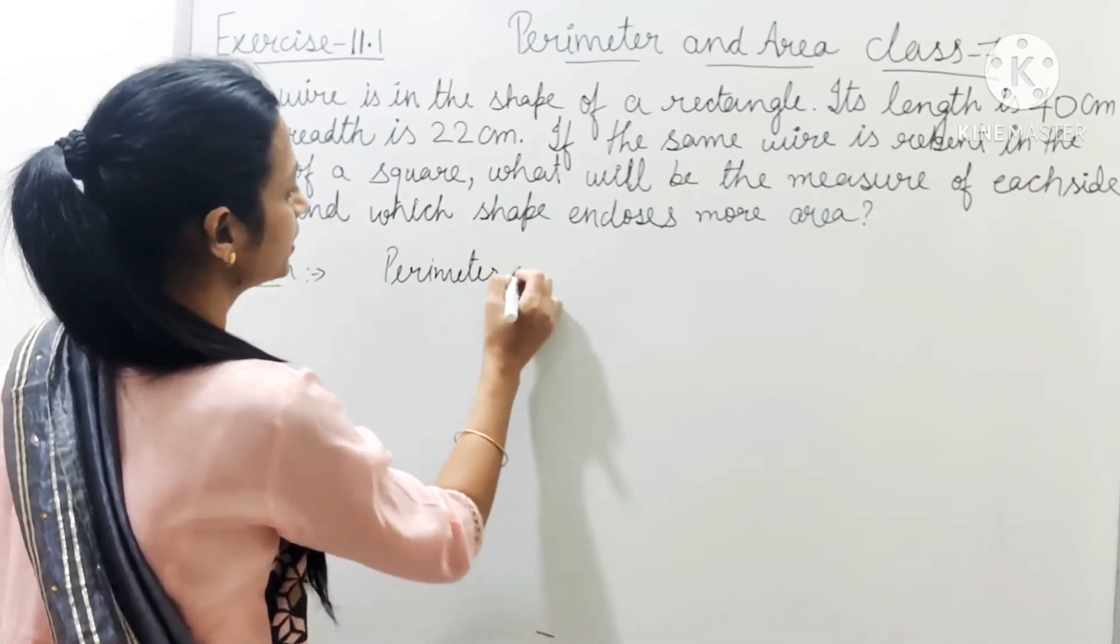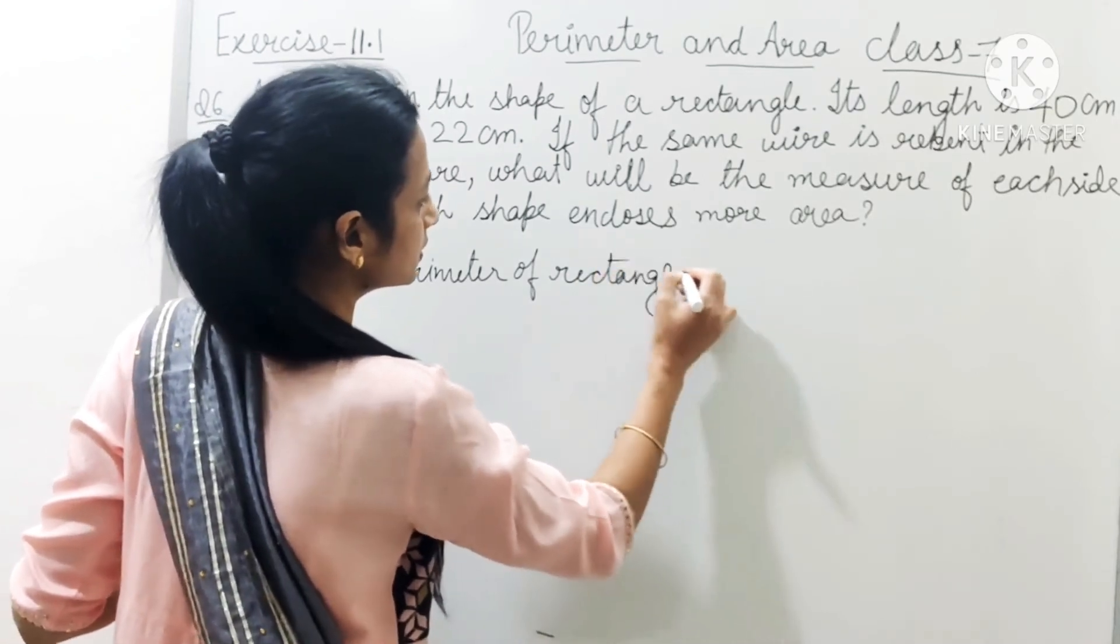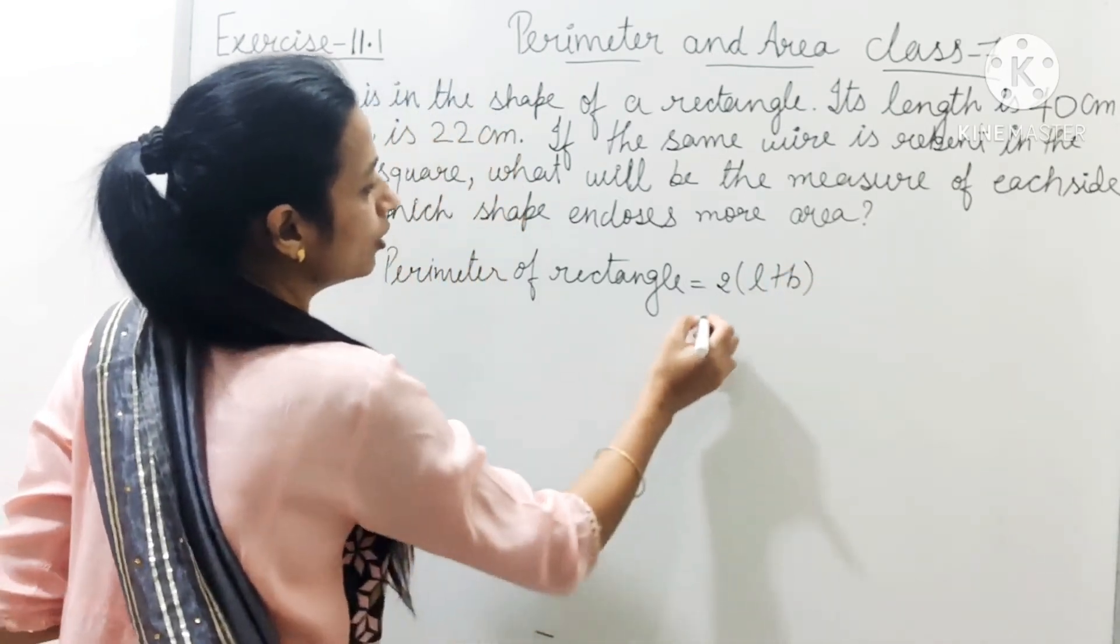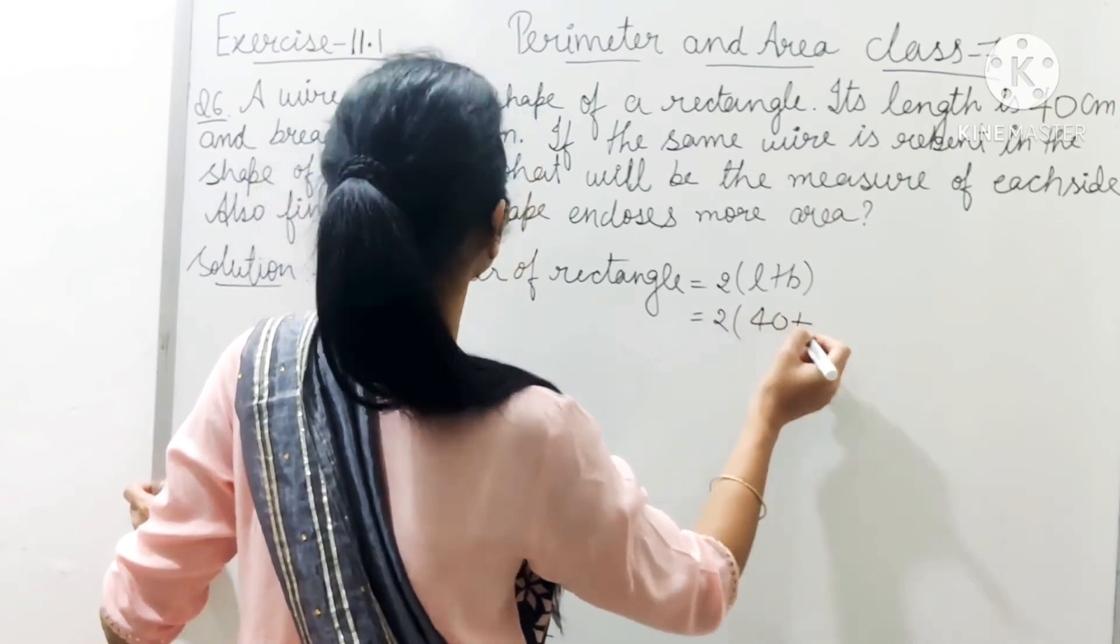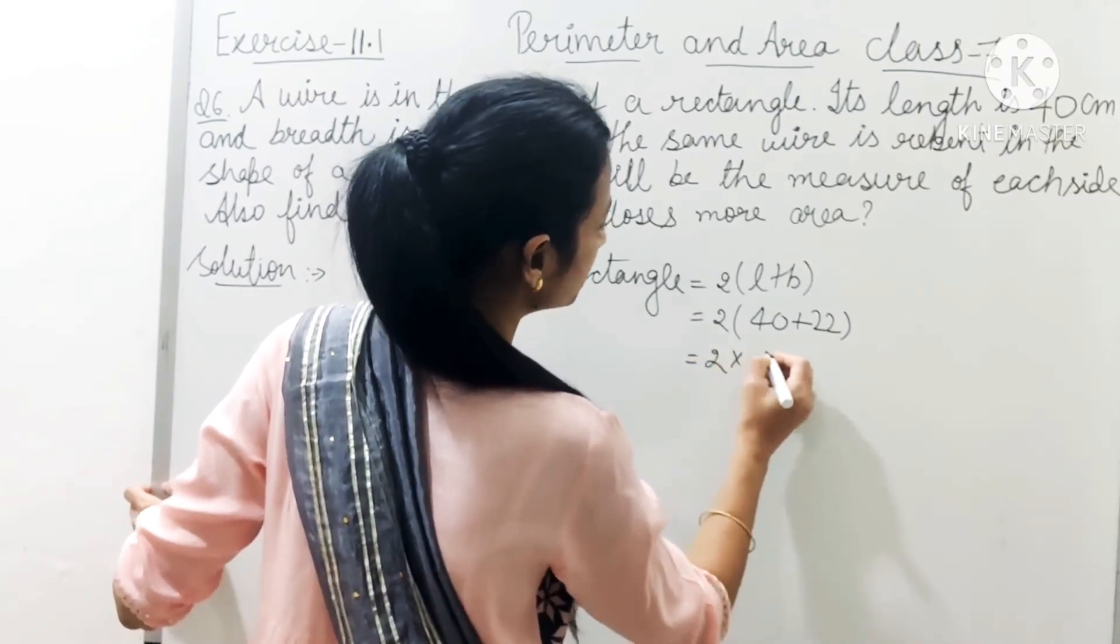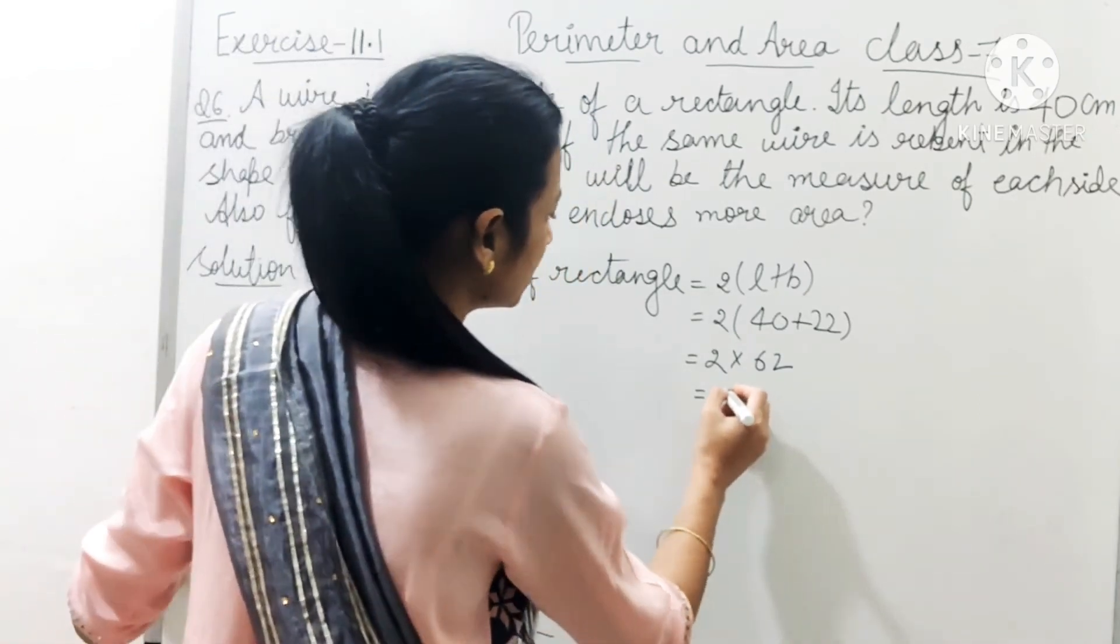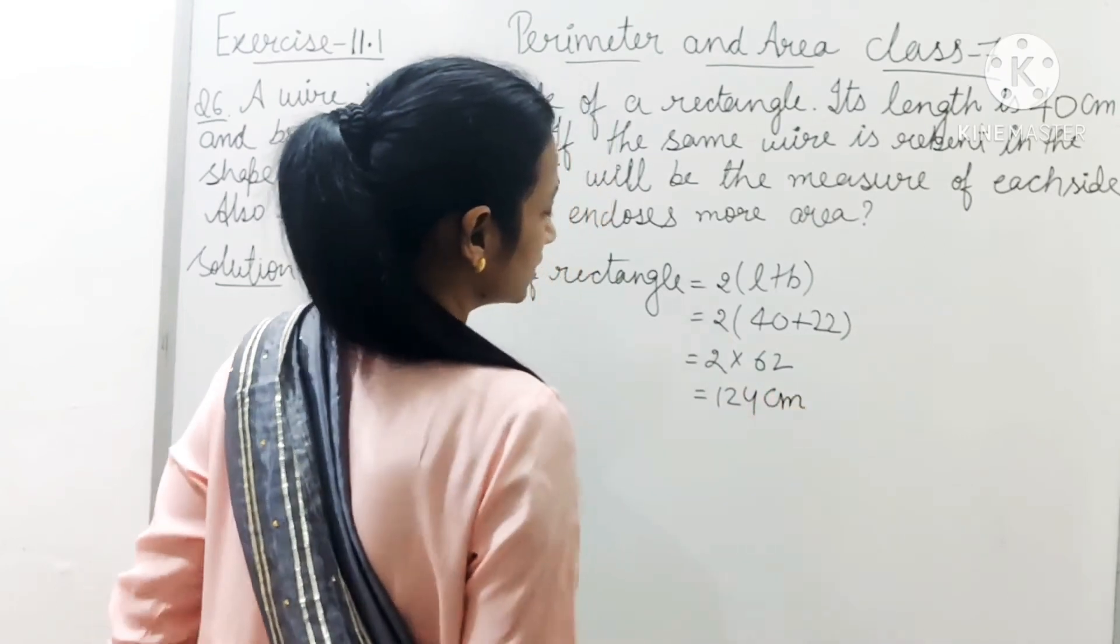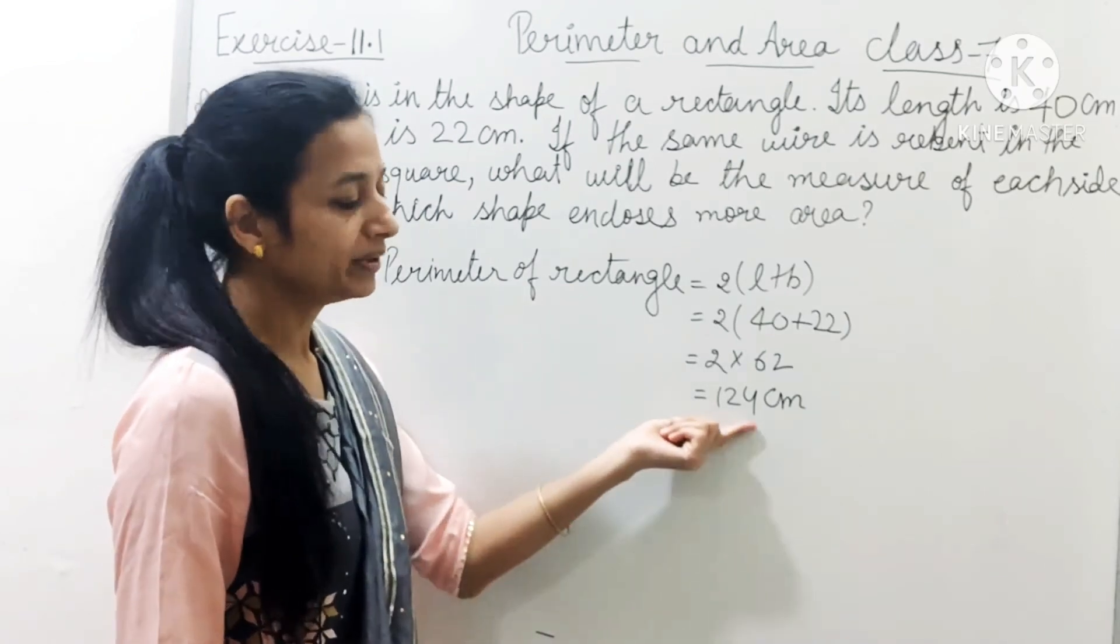Perimeter of rectangle equals to 2 into length plus breadth. And breadth is 22. So 2 into 40 plus 22, that is 2 into 62, and we will get 124 cm. This is our perimeter of the rectangle.